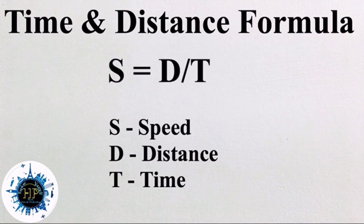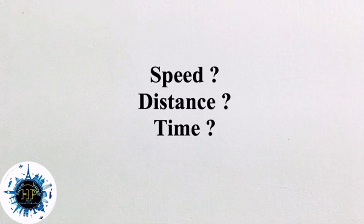The time-distance formula is S = D/T, where S means speed, D means distance, and T means time — that is, speed equals distance divided by time. Sometimes questions ask for speed and give time and distance. Other cases ask for distance and give speed and time. And some cases ask for time, giving speed and distance.